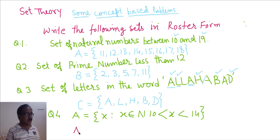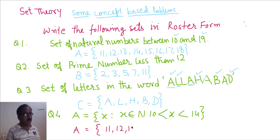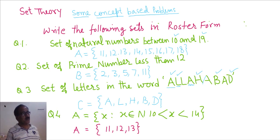How will we write A? We have to write all the elements between 10 and 14, that is 11, 12, and 13. These are a few examples related to roster form.